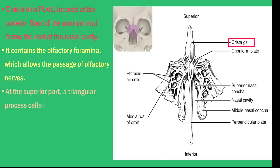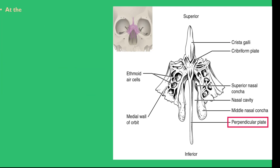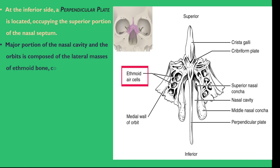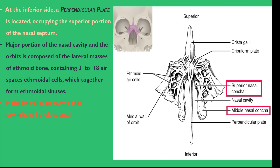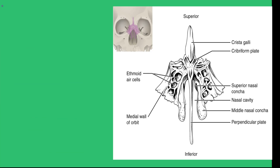At the superior part, a triangular process called the crista galli is located, which is a point of attachment for membranes that separate the brain into two sides, the left and right. At the inferior side, a perpendicular plate occupies the superior portion of the nasal septum. The lateral masses of the ethmoid bone compose the major portion of the nasal cavity and the orbits, containing three to eighteen air spaces known as ethmoidal cells, which together form the ethmoidal sinuses. Two thin scroll-shaped projections lying lateral to the nasal septum, called the superior nasal concha and the middle nasal concha, are present. The inferior nasal conchae are separate bones.